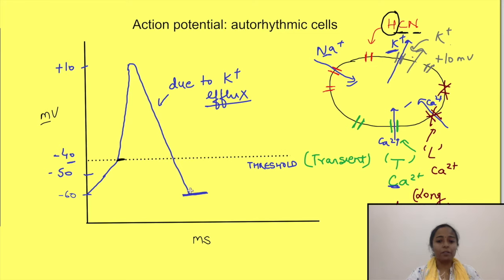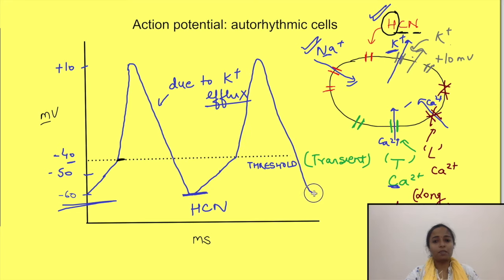So now we have reached our starting point. If you remember, we started with HCN channels which open at minus 60 millivolts. So at this point these HCN channels open and allow entry of sodium ions. So again the potential starts rising towards positive and the cycle repeats itself.